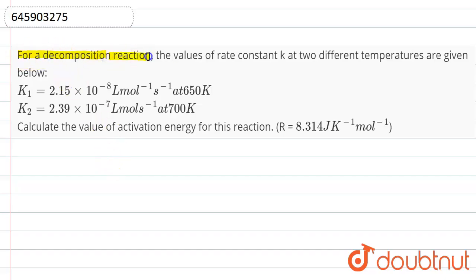a decomposition reaction. The values of rate constant k at two different temperatures are given below: k1 and k2 are given at different temperatures, at 650 and 700 Kelvin. Calculate the value of activation energy for this reaction.